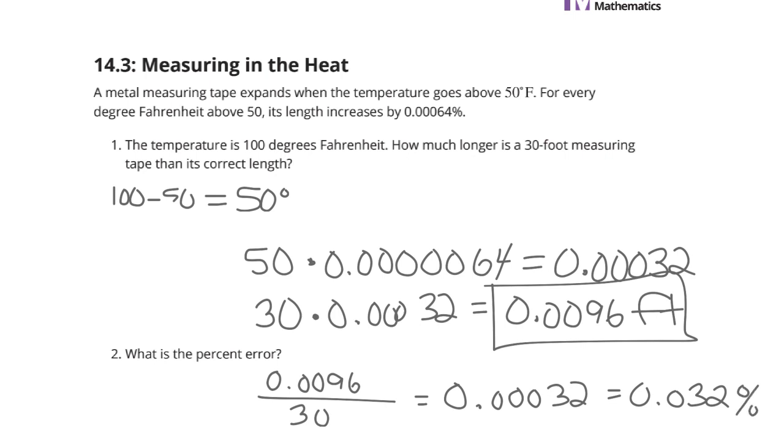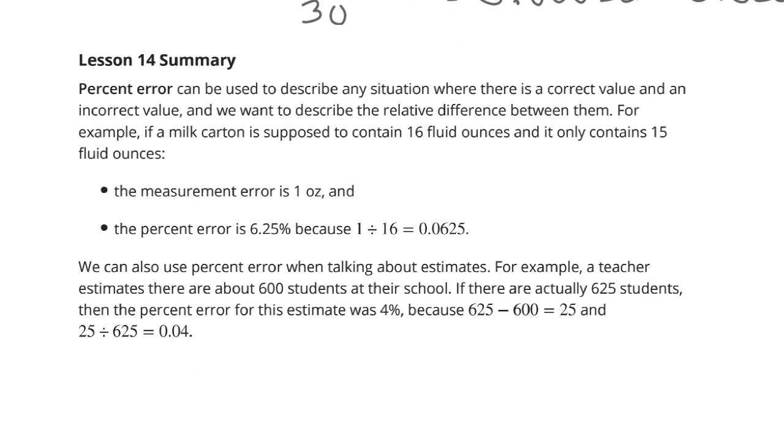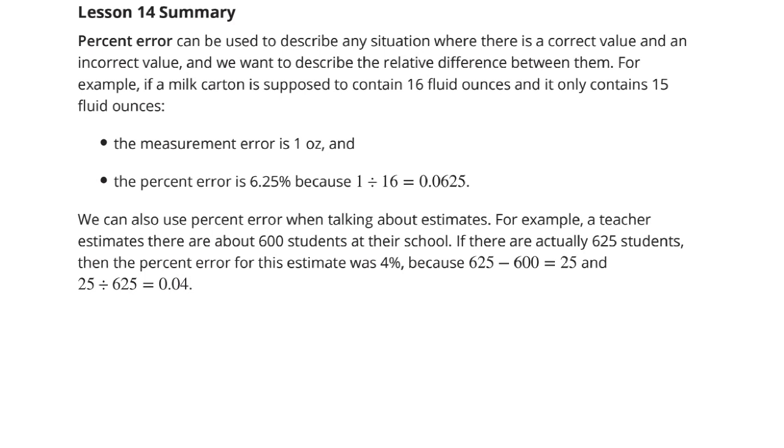All right. As we head towards our summary now, percent error can be used to describe any situation where there is a correct value and an incorrect value. And we want to describe the relative difference between them. For example, if a milk carton is supposed to contain 16 fluid ounces and it only contains 15 fluid ounces, the amount of error is 1, and the percent of error is 6.25% because 1 divided by 16 is 0.0625.